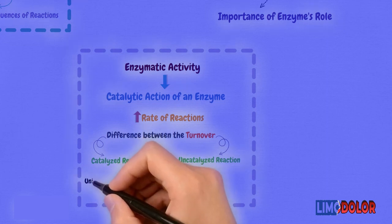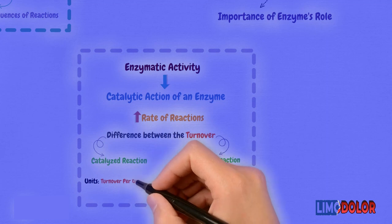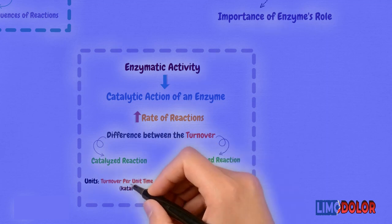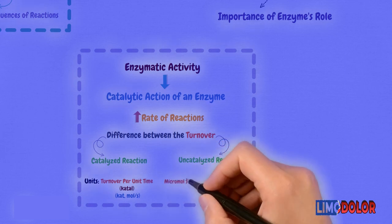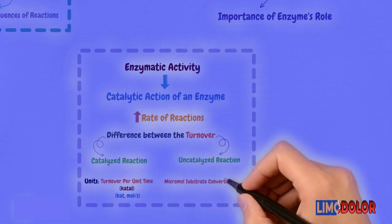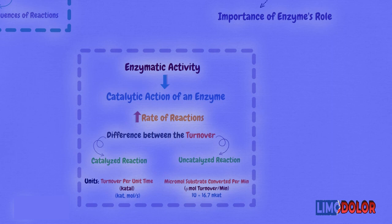The unit used for enzymes is usually turnover per unit time, expressed in cato, or cat, mole per second. Enzyme units are expressed as micromole substrate converted per minute, u-mole turnover per minute, and 1u is equal to 16.7n cat.